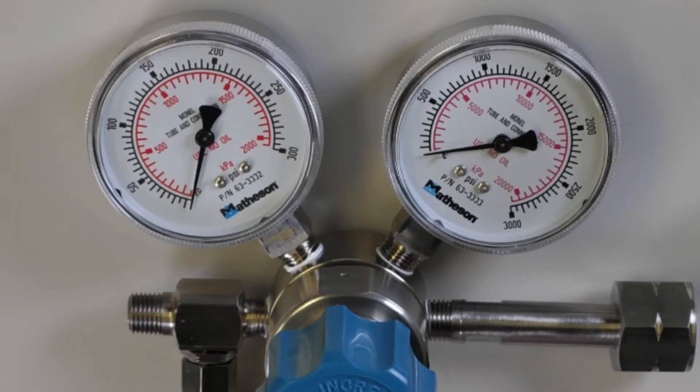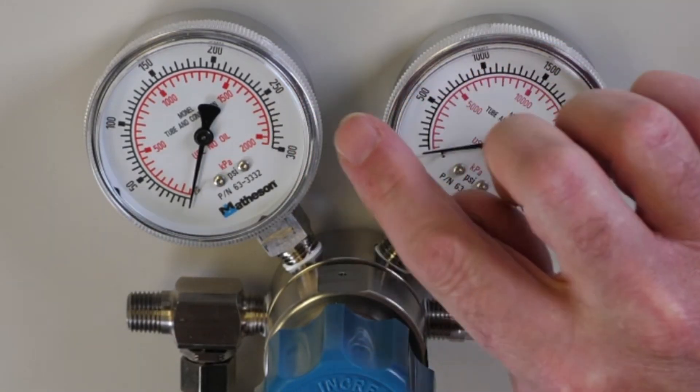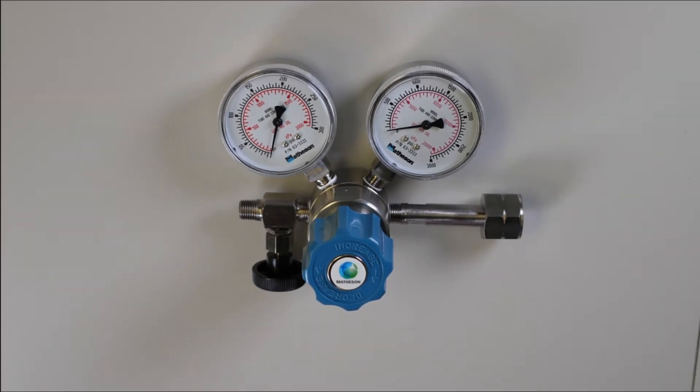This is the 3220B with a 4 to 250 PSI delivery pressure. The 3219B has a 1 to 50 PSI delivery pressure with a 100 PSI gauge.